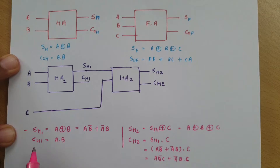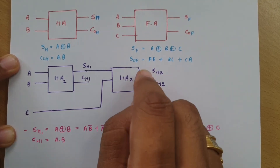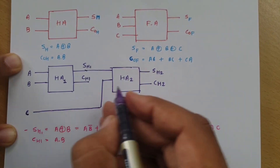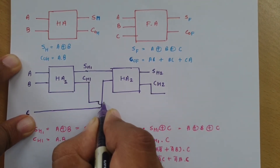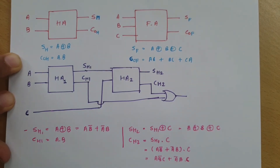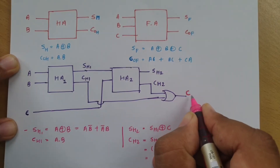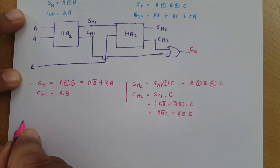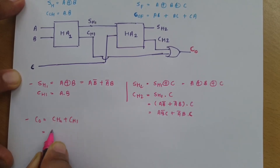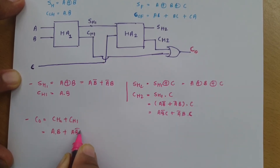Now, if we observe CH1 and CH2 and perform the OR operation of both carries, we can simplify that to the full adder carry. So we do the ORing of CH2 and CH1. Let us call this CO. Then CO equals CH2 plus CH1, which is A·B plus A·B̄·C plus Ā·B·C. Now we need to simplify this.